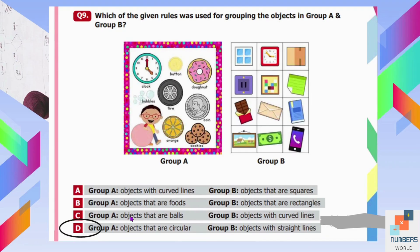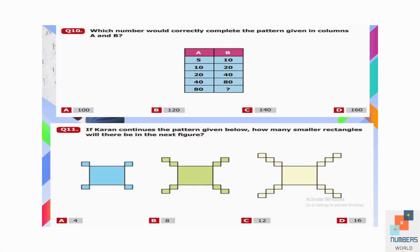Question number ten: Which number correctly completes the pattern in columns A and B? Every next number is double the previous: 5, 10, 20, 40, 80. Similarly 10, 20, 40, 80 — double of 80 is 160. D is our answer.